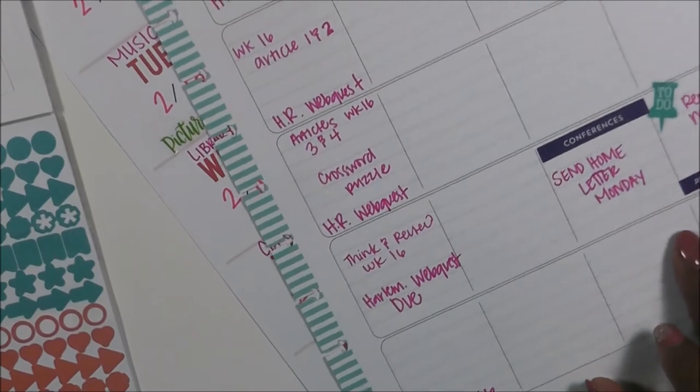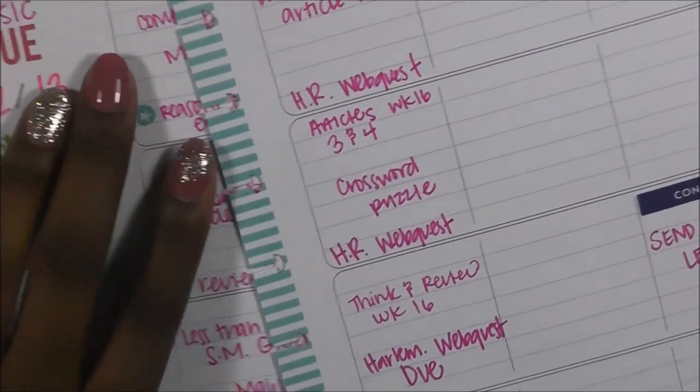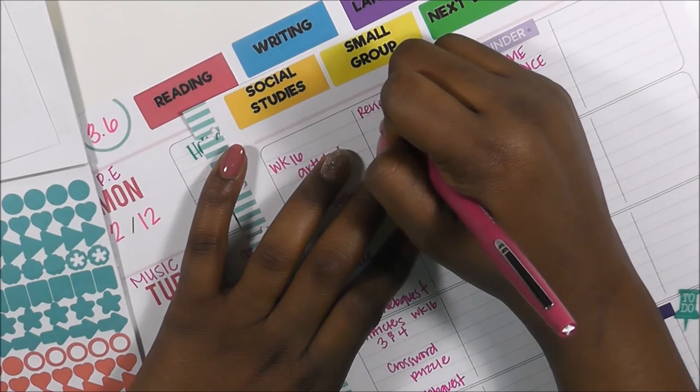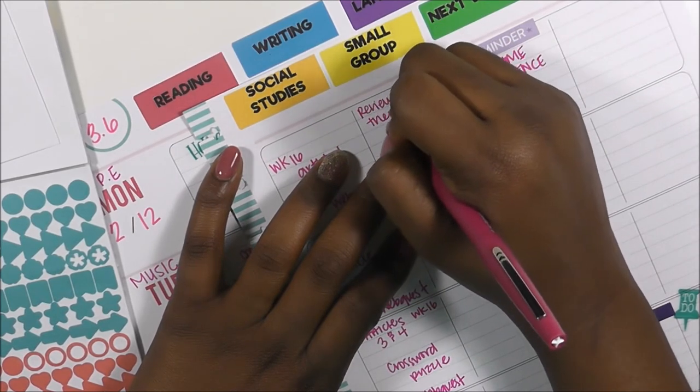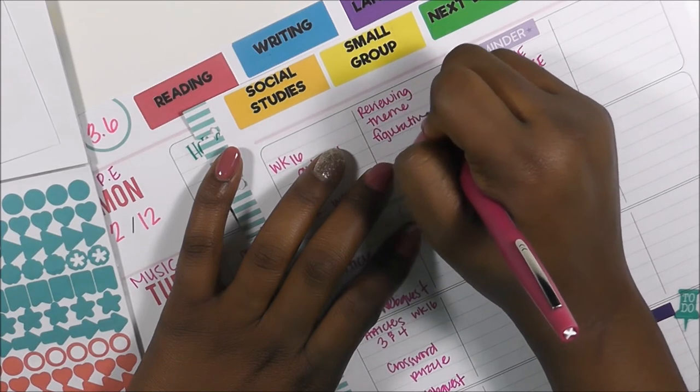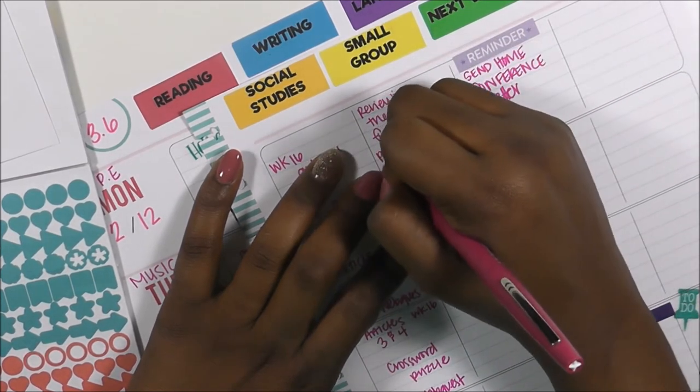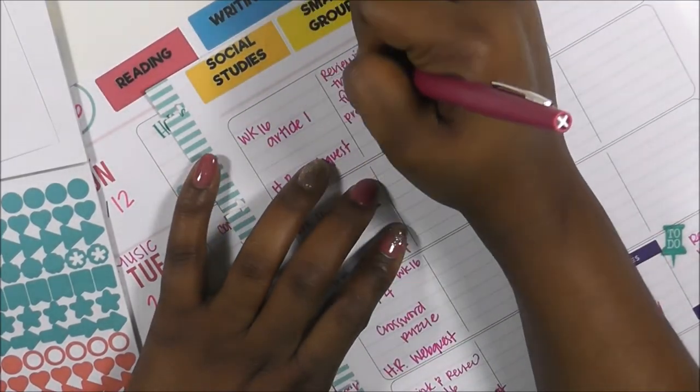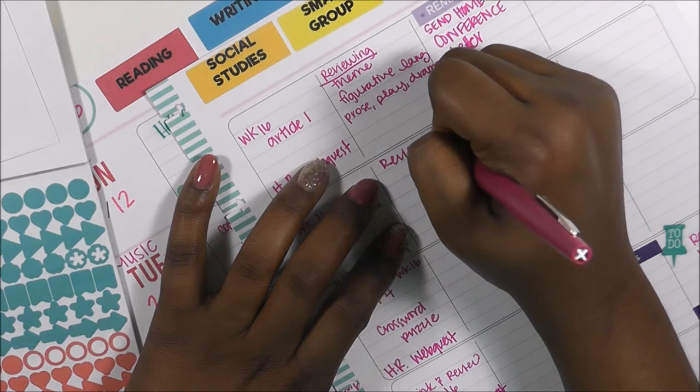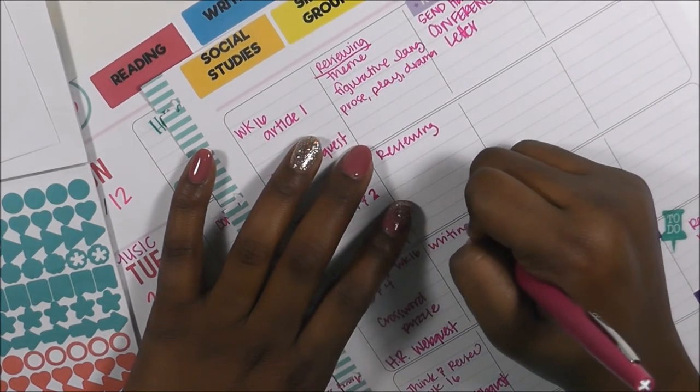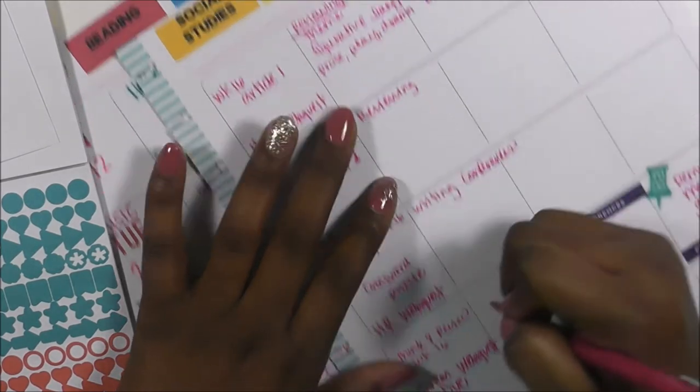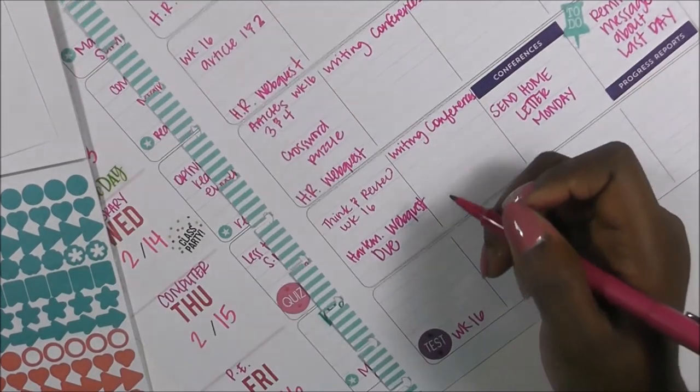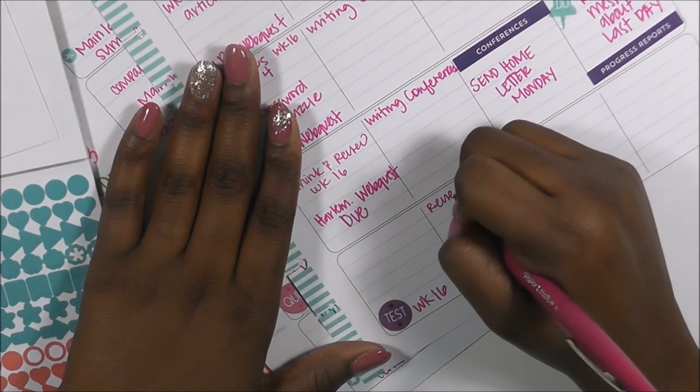So you guys can see a little bit better what I'm writing here. All right, so in small groups this week I'm just going to be reviewing figurative language and prose, plays, movies, and dramas. And I'm going to do those up until Wednesday, and then I'll start my writing conferences. And then on Thursday, I mean Friday, I'll be reviewing.